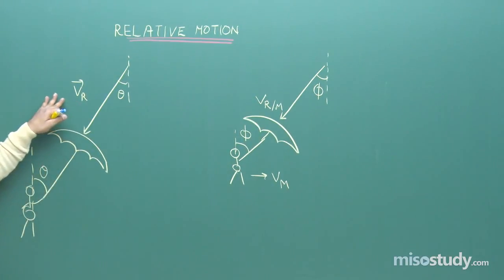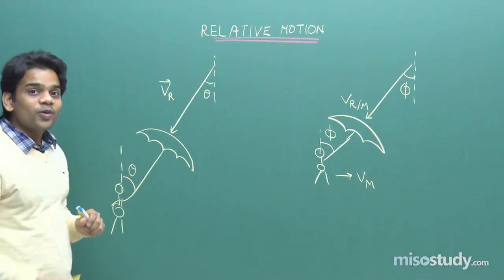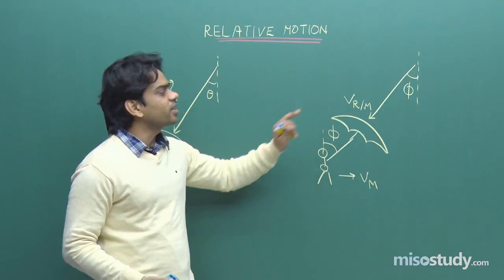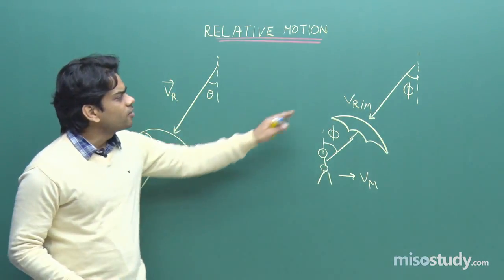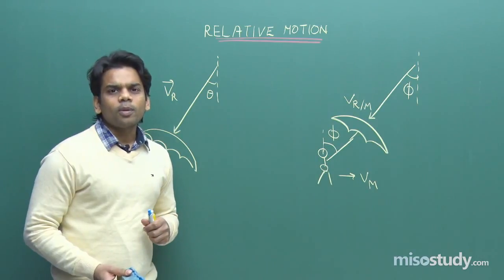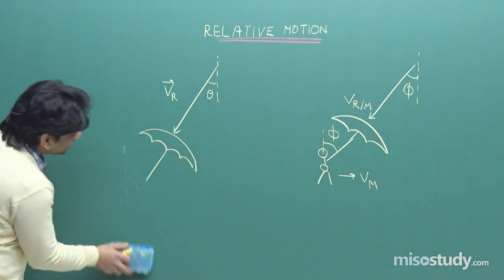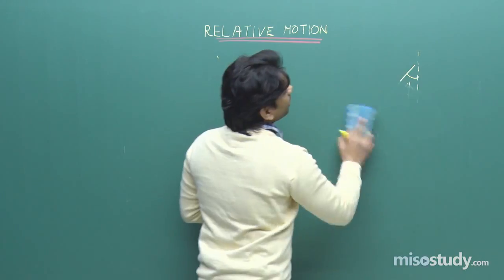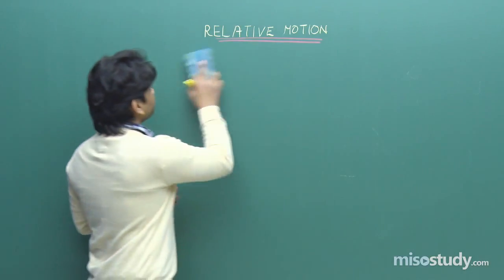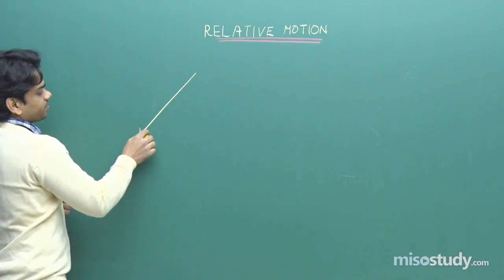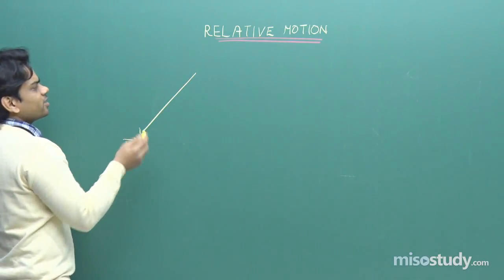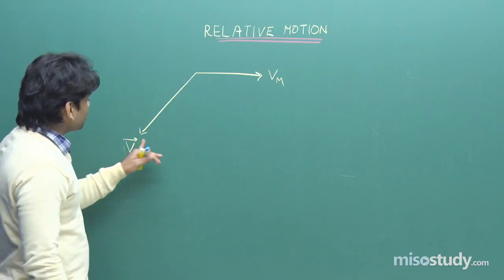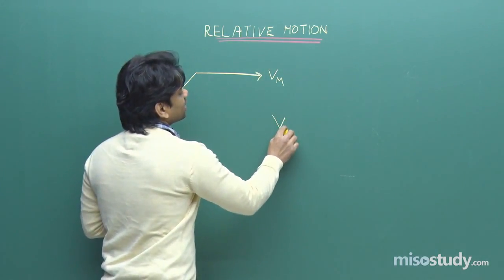Let's come back to the initial case. When we are moving, we do not express rain velocity as it is; we have to express it as observed by us — that is V_R with respect to M. Now let's see the triangle rule that will ease calculations for the rain-man problem. The rain was falling in this direction — this is the velocity of rain. You move along this direction — this is the velocity of man.